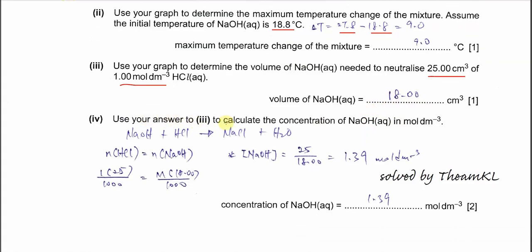Part a4: use your answer in part three to calculate the concentration of sodium hydroxide in mol/dm³. The mole ratio between NaOH and HCl is 1:1, so moles of HCl equals moles of NaOH at the neutralization point. Using MV/1000 for both: concentration of NaOH = (1 × 25) / 18, giving approximately 1.39 mol/dm³.